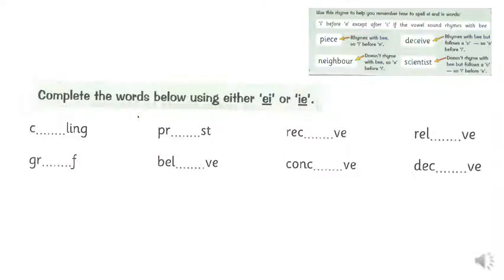Next activity. Again, can you complete the words below using either EI or IE? What do you think they would be? And again, use the little table here to help remind you. Really remember that rule I before E except after C. Pause the video and have a go.